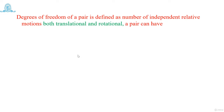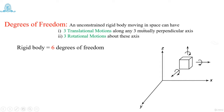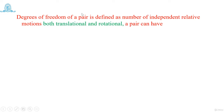Degrees of freedom for a pair is defined as the number of independent relative motions — both translation and rotational — that a pair can have. In the previous slide, we discussed degrees of freedom for an unconstrained rigid body in space with three mutually perpendicular axes, giving six degrees of freedom. Now we are considering degrees of freedom for a pair of a mechanism. A pair means two links connected together with relative motion between them, where one link may be grounded.